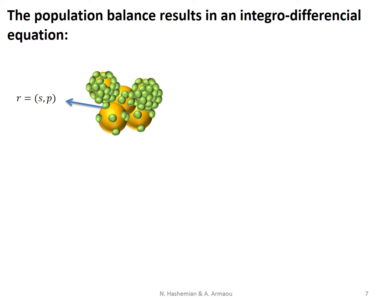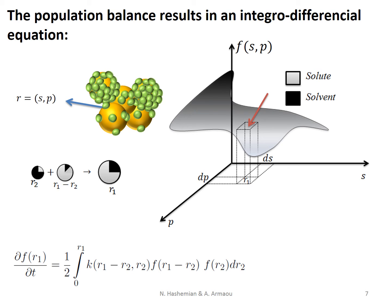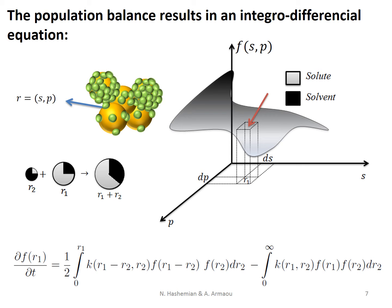Each particle in this process has two components. The total mass of a particle is denoted by P, and S represents the mass of the binder content in the particle. F of P and S describes the population distribution of the particles. In this small range, the number of particles may increase because of particle formation from smaller ones, or they may decrease because of collision with other particles and bigger particle formation. This integral differential equation considers these two phenomena to obtain the rate of population distribution change, where K is the kernel of formation of particles from particles R1 and R2.